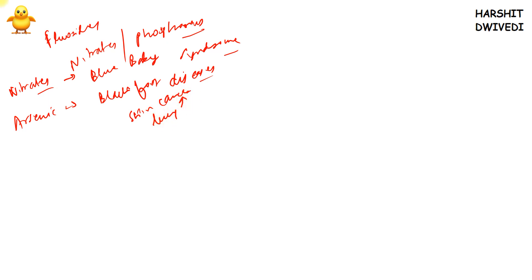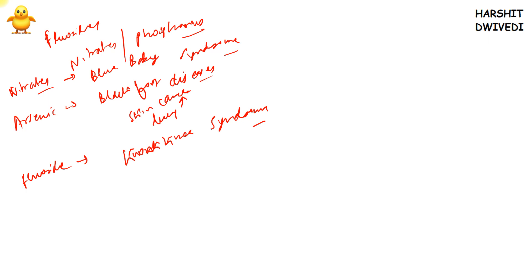Regarding fluoride: in trace quantities fluoride is important for our bones and teeth, but excess fluoride causes bone deformities, knock knee syndrome, neurological and neuromuscular problems, gastrointestinal problems, painful joints, hardening of bones, and outward curving of bones. So the effects of water pollution on human health are quite significant and need to be contained.